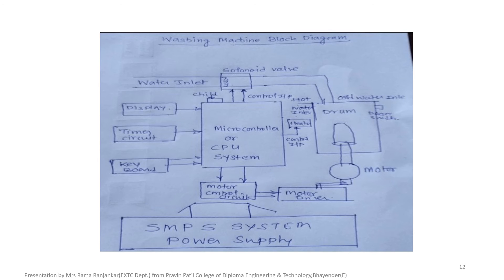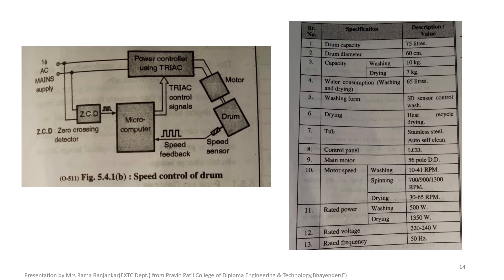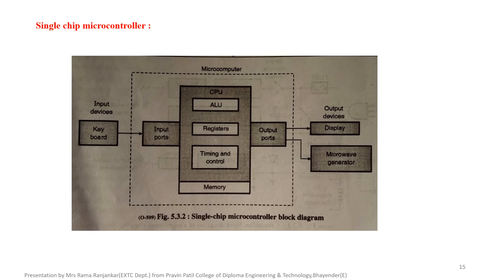This is the block diagram of the washing machine. A single-chip controller or microcontroller is used, which performs various operations of the washing machine. These are the inputs and outputs of the washing machine. The washing machine has three types: one is a washer where clothes are simply washed; semi-automatic, where some portions are manual; and automatic, where all the programs are done automatically. This functional display shows speed control of the drum. The single-chip microcontroller is similar to the central processing unit of a computer and has registers, timing, control, memory, and input/output interfaces.